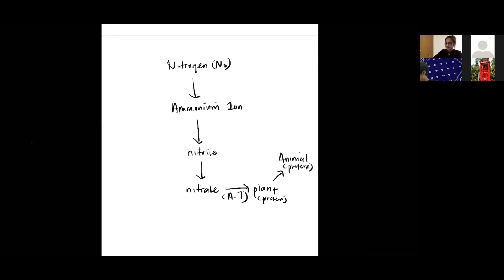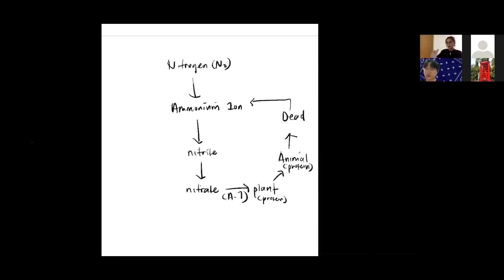What happens when they die? Dead plants and dead animals will get decomposed back into ammonium ions. Once they decompose, they will become ammonium ions. Now write down the processes.